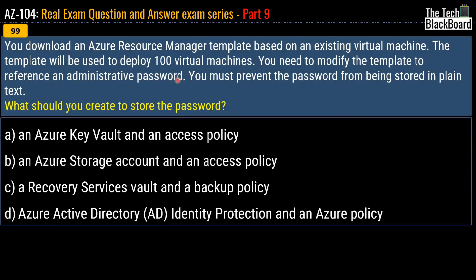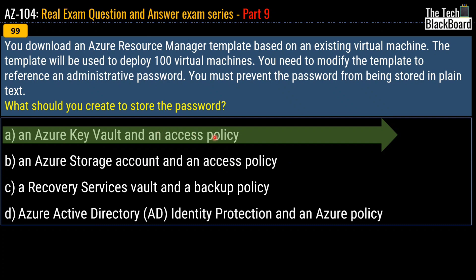Question 99: you download an Azure Resource Manager template based on an existing virtual machine. The template will be used to deploy 100 virtual machines. You need to modify the template to reference an administrative password and want to prevent the password from being stored in plain text. What should you create to store the password? Options are: an Azure Key Vault and an access policy; an Azure Storage Account and an access policy; a Recovery Services Vault and a backup policy; or Azure Active Directory Identity Protection and an Azure policy. The correct answer is Azure Key Vault and an access policy. Whenever a question involves password storage or encryption of passwords and certificates, Azure Key Vault should always come to mind.